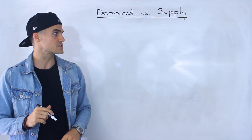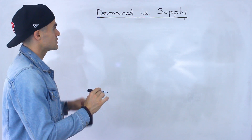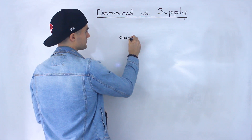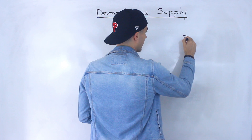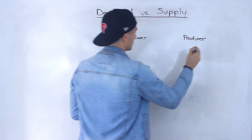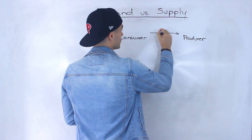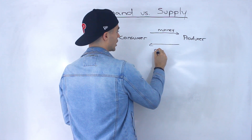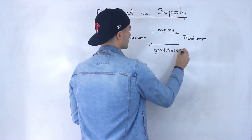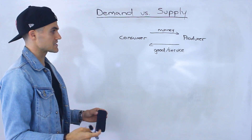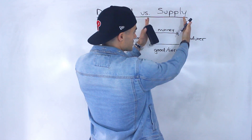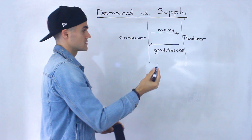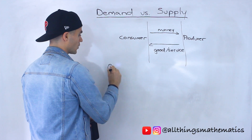To begin describing demand and supply from a higher level, let's bring back that fundamental transaction in economics between a consumer and a producer. As we know, a consumer gives a producer money, and in return, a producer gives a consumer a good or service. This next section on demand and supply is going to go into more detail — the money portion and the good or service portion — and we're first going to look at demand.